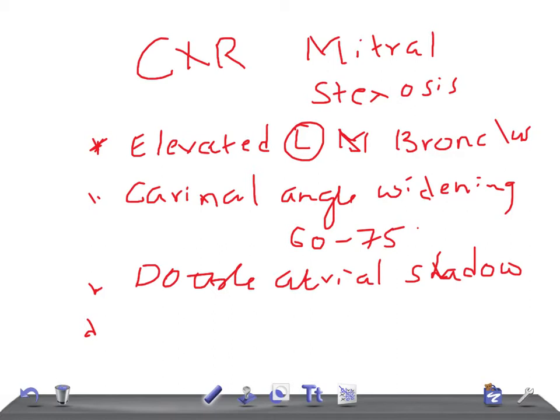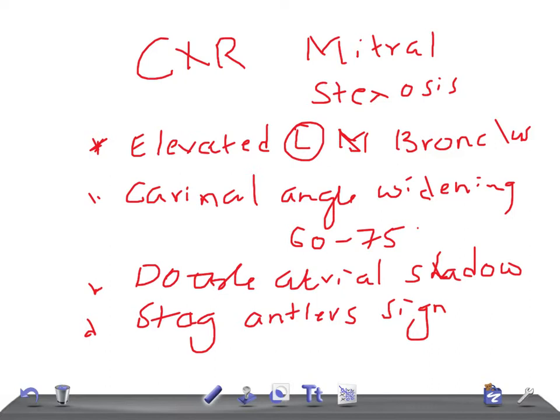Upper lobe venous diversion with prominent upper lobe veins — this is known as the stag antlers sign. The upper lobe veins will be very prominent in mitral stenosis.